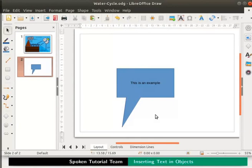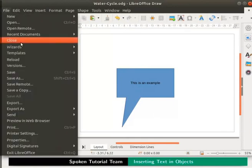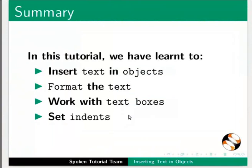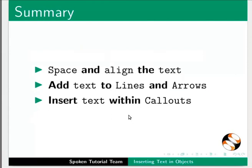Likewise, we can insert any text or callout in our drawing as per our requirements. Save all the changes and close the file. This brings us to the end of this tutorial. Let us summarize: in this tutorial we have learnt to insert text in objects, format the text, work with text boxes, set indents, space and align the text, add text to lines and arrows, and insert text within callouts.